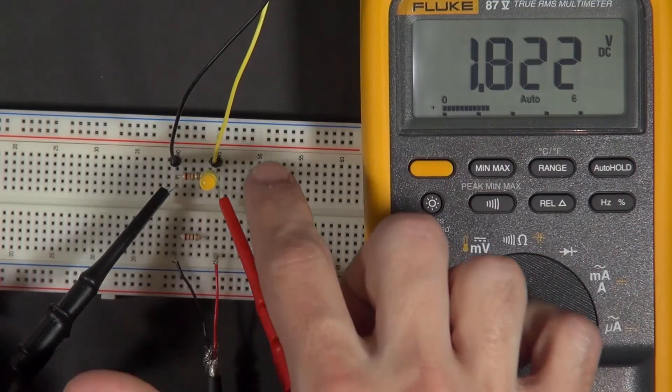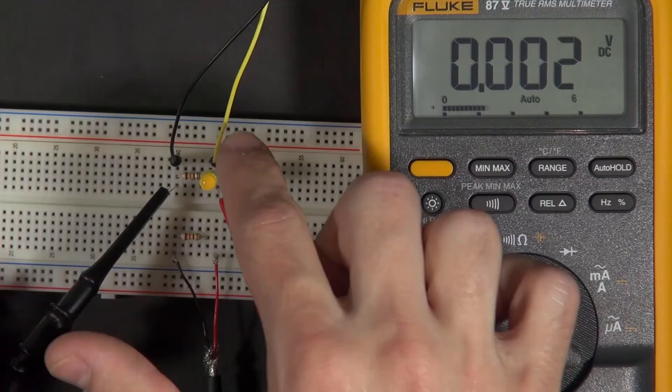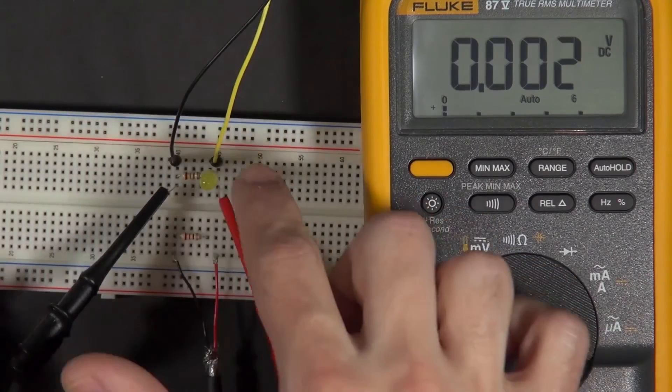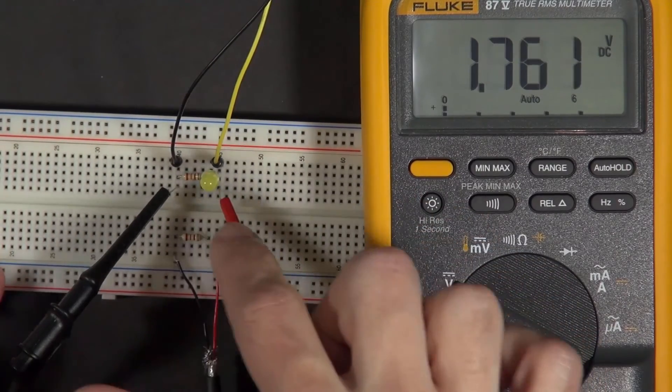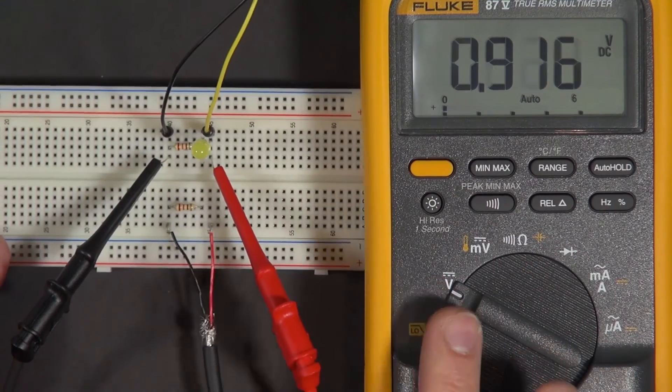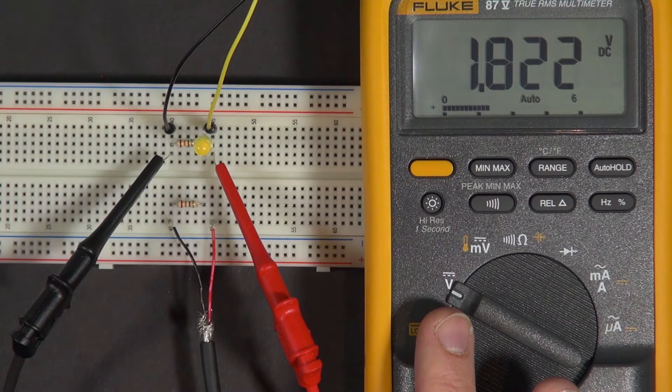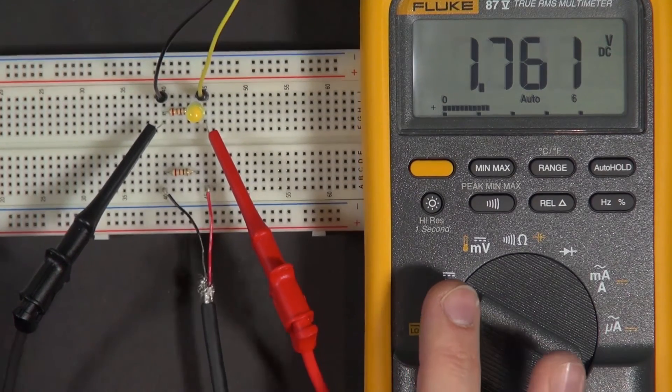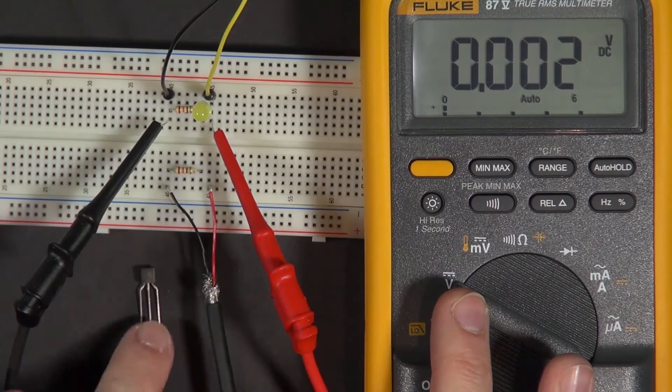So the question is, how can we use this voltage differential, somehow detect that there's a voltage change there, and still get current through the LED? The answer to that is an ingenious little component called the transistor, which you've probably heard of. I have some transistors here.